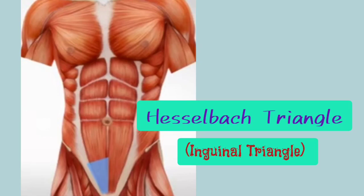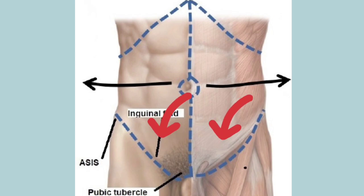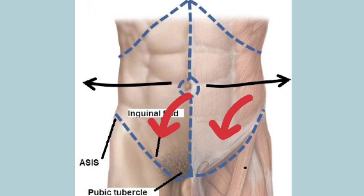Hesselbach's triangle is also called the inguinal triangle. It is the region of the lower anterior abdominal wall or groin, and it is present bilaterally — both on the left side as well as on the right side.